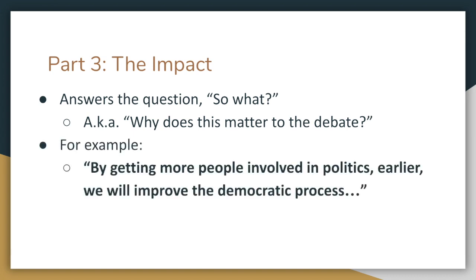For example: by getting more people involved in politics earlier, we will improve the democratic process. This is going to cause higher voter turnout, which is already a major problem in the United States where it's very difficult to get people to come out and vote. And more voter turnout will mean that the citizenry will make better choices in elected officials, leading to superior policy decisions, better laws, peace, prosperity, justice, etc. Of course, I would include evidence for that — I wouldn't just say it.